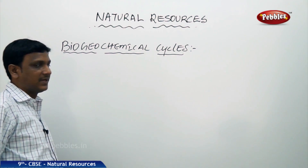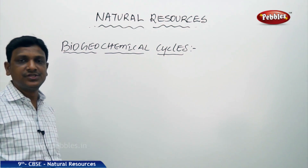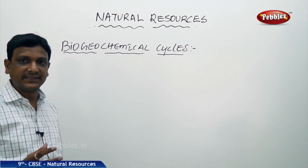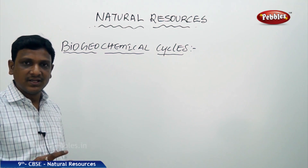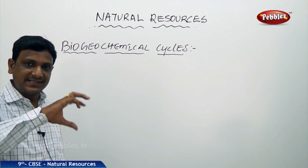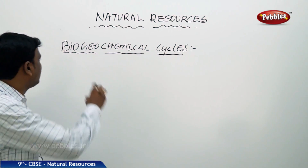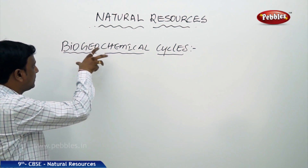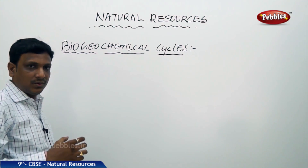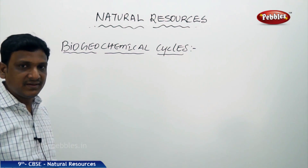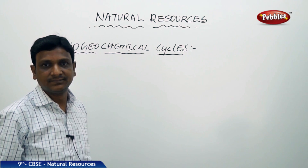Let us talk about the bio-geochemical cycles. What are these bio-geochemical cycles? There are certain chemicals which are recycling — they are moving between the biological agents and geo, that is the earth. So the chemicals are being transferred from the living things to the earth and from the earth to the living things.